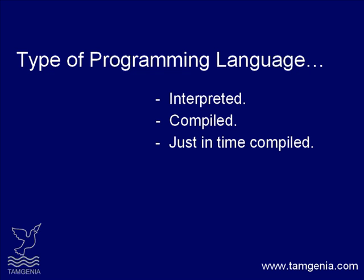In the case of compiled languages, they are pre-compiled at the time of development into executables, which are machine-level language. They are faster to execute. C and C++ are examples of this type of language.